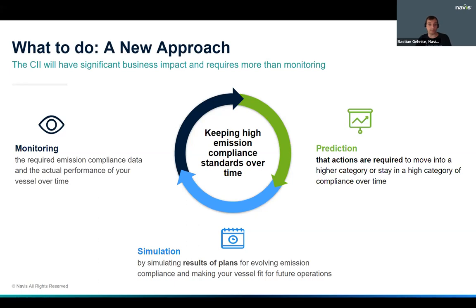To keep emission compliance standard over time, you not only need to be aware of the current situation, but also the future situation. That brings us to prediction, which should make you aware that actions are required to move into a higher category or to stay in a good category. Since the thresholds are getting more narrow, the prediction will show you at what point in time actions need to be taken. However, just predicting that at one point you will get into trouble will not bring you out of that situation. That's why simulating the results of plans you have for emission compliance should be a possibility — multiple scenarios simulated into the future to see what the result actually means for your CII.